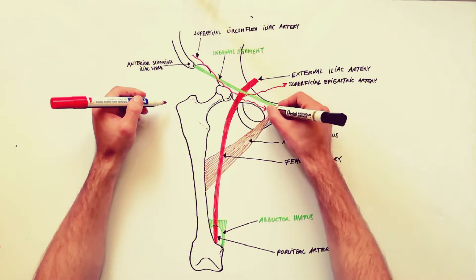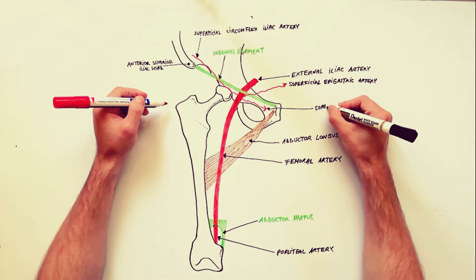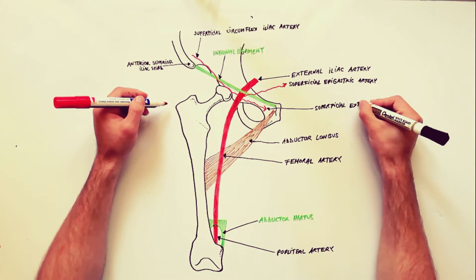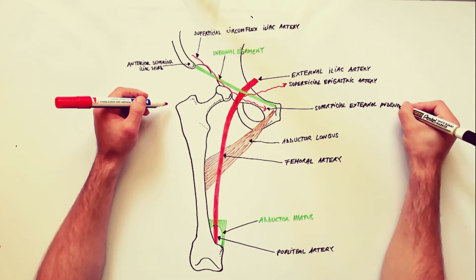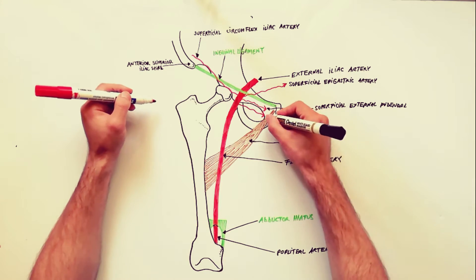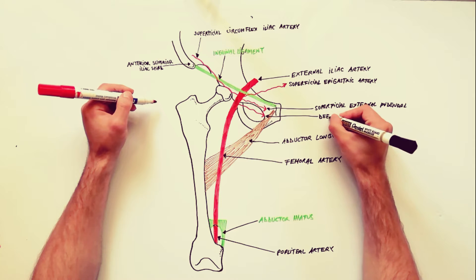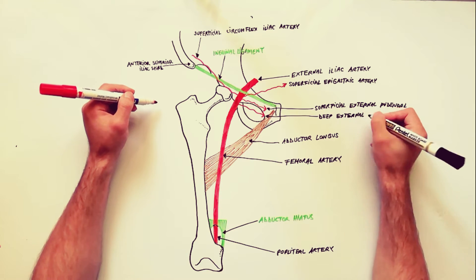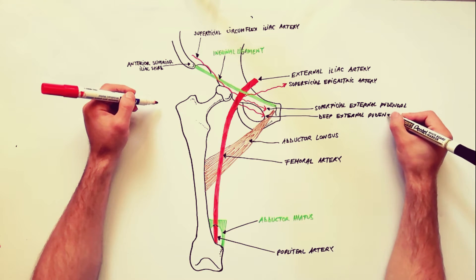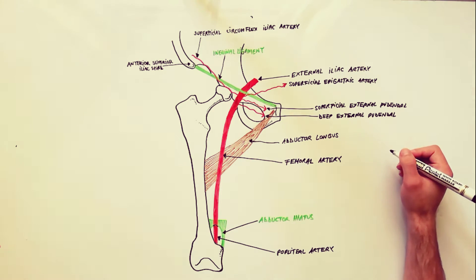The superficial external pudendal artery is a small branch that runs medially to supply the skin of the scrotum or labium majus. The deep external pudendal artery also runs medially to supply the skin of the scrotum or labium majus.